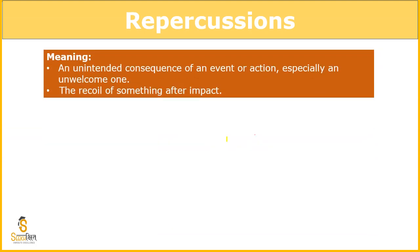So the first word is repercussions. Repercussions are the effects of a certain thing we do. If I am doing something, the consequences of it, we say repercussions. But we use this term when we have to show something which has a negative impact, and perhaps when I was doing that thing, I did not foresee it. The effect which is unforeseen is called repercussions.